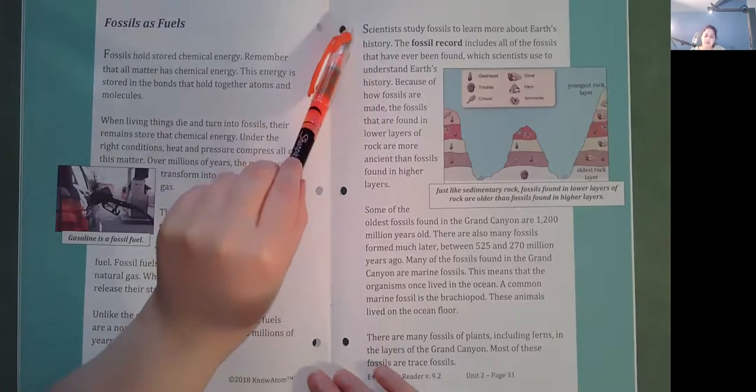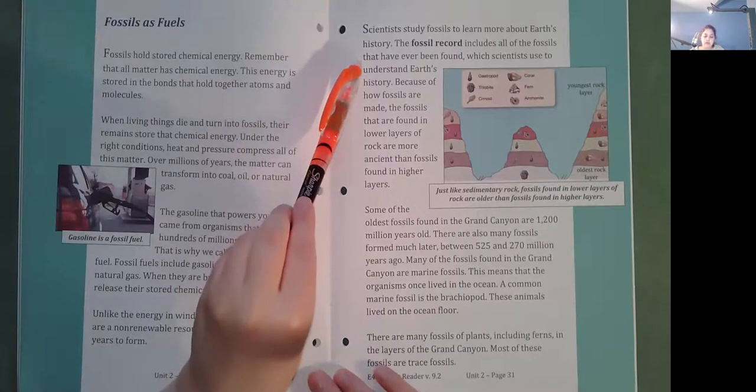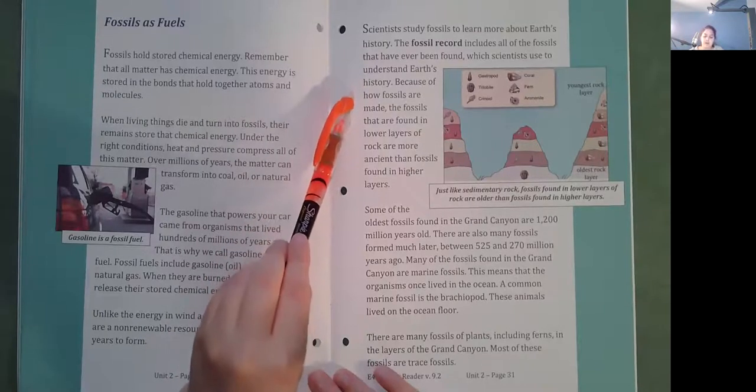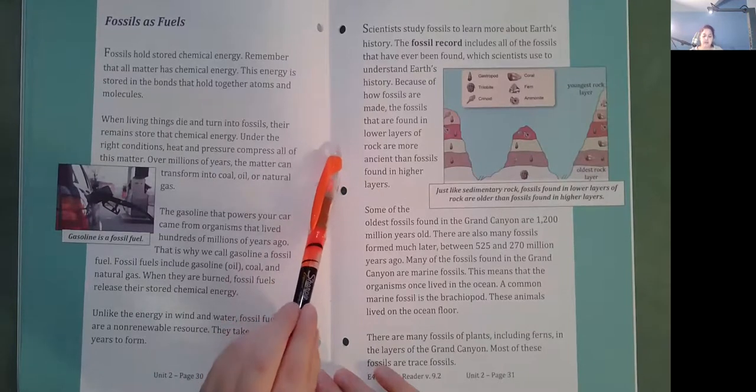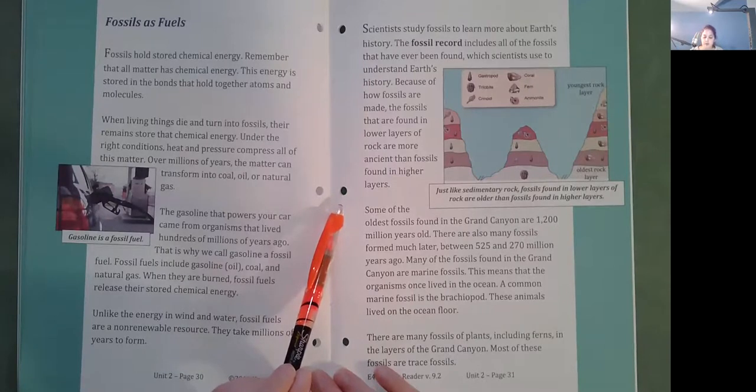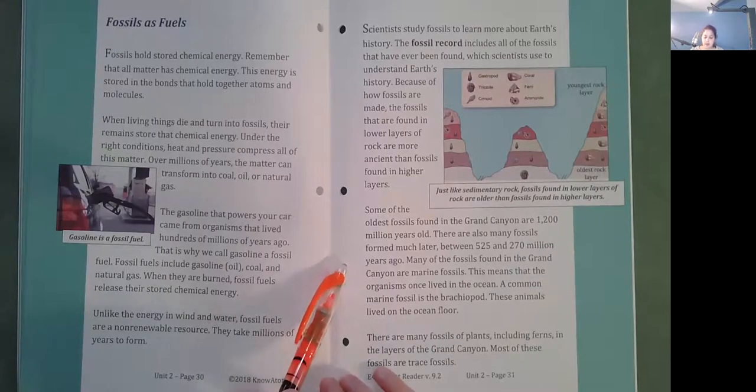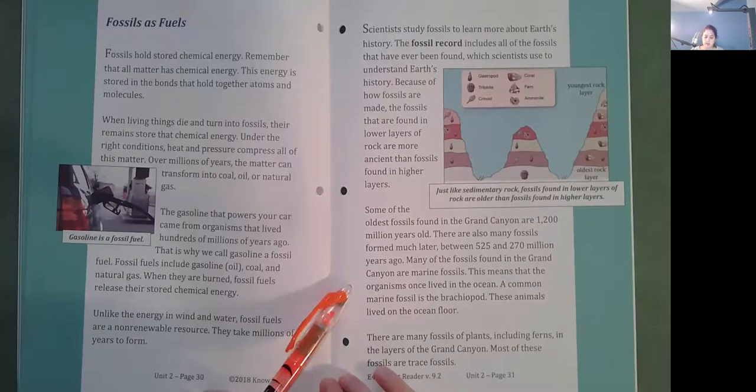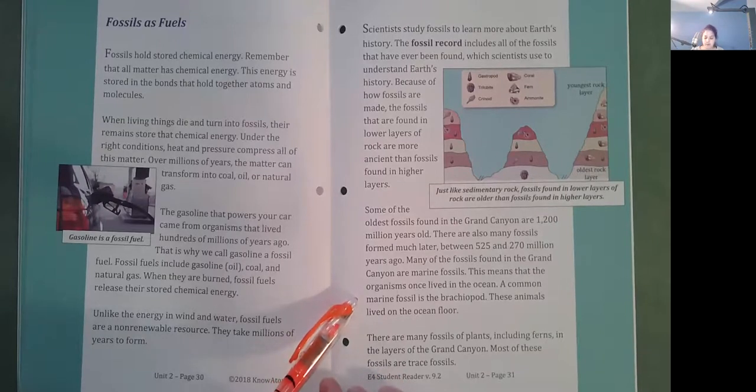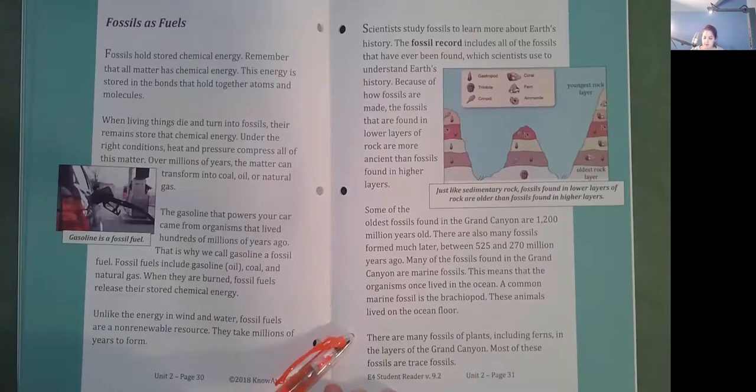Scientists study fossils to learn more about Earth's history. The fossil record includes all of the fossils that have ever been found, which scientists use to understand Earth's history. Because of how fossils are made, the fossils that are found in lower layers of the rock are more ancient than fossils found in higher layers. Some of the oldest fossils found in the Grand Canyon are 1,200 million years old. There are also many fossils formed much later, between 525 and 270 million years old. Many of the fossils found in the Grand Canyon are marine fossils. This means that the organisms once lived in the ocean. A common marine fossil is the brachiopod. These animals lived on the ocean floor. There are many fossils of plants, including ferns, in the layers of the Grand Canyon. Most of these fossils are trace fossils.